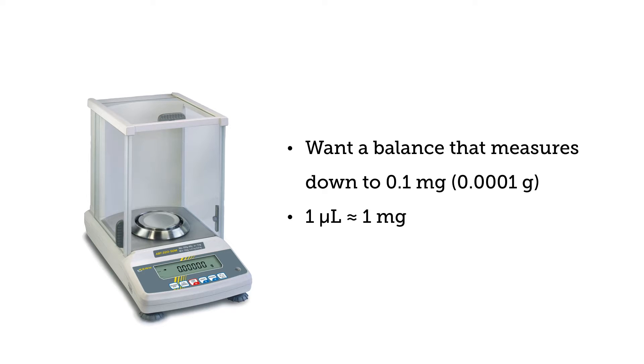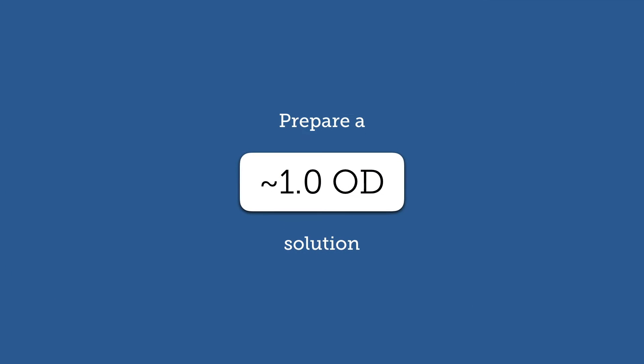Before preparing the sample dilution you'll need to figure out what volumes are going to be needed in order to prepare a solution that has an absorbance or optical density of about 1 since that's the optimal OD for measuring on the spectrophotometer.